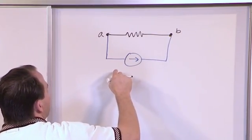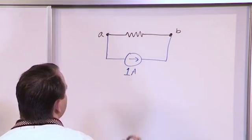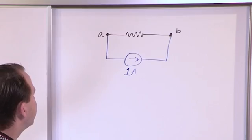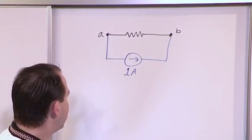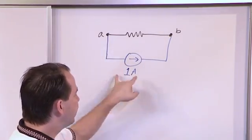So you have a current source in the lab, and this current source is known - let's say it's a 1 amp current source. What you would do is hook this resistor up to a known current source of 1 amp. It doesn't matter if it's 1 amp; it could be 5 milliamps or anything. But let's say it's 1 amp.